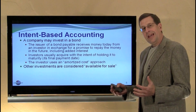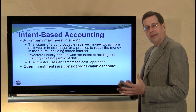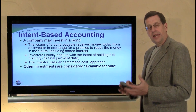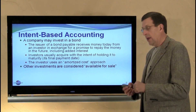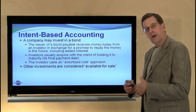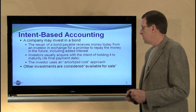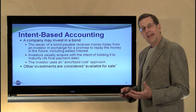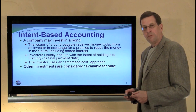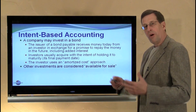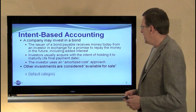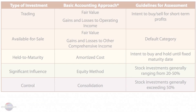Finally, anything that doesn't meet one of these other categories — trading, held to maturity, equity method, or consolidation — those are accounted for as available-for-sale securities. As you can see, we're growing a fairly complicated scenario.